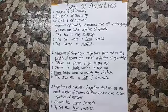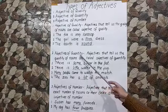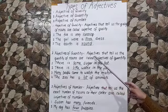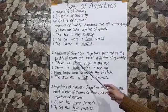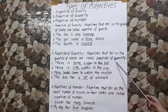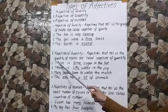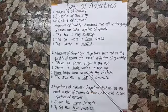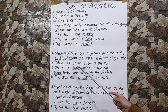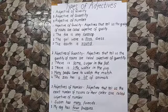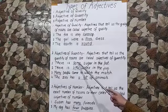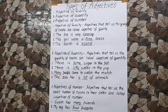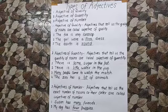Now children, let us study about adjectives of quantity. Adjectives that tell us the quantity of nouns are called adjectives of quantity. There is some sugar in the pot. How much sugar? Some sugar. So some tells us about the noun sugar. The word some is describing the uncountable quantity of sugar, and sugar is a noun, so some is an adjective of quantity.